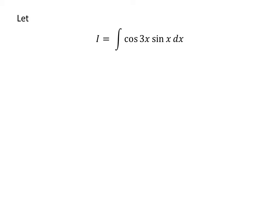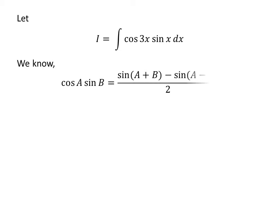Let us assume i is equal to the integral of cosine of 3 times x times sine of x with respect to x. We know the trigonometry identity: cosine of a times sine of b is equal to sine of a plus b minus sine of a minus b, upon 2.